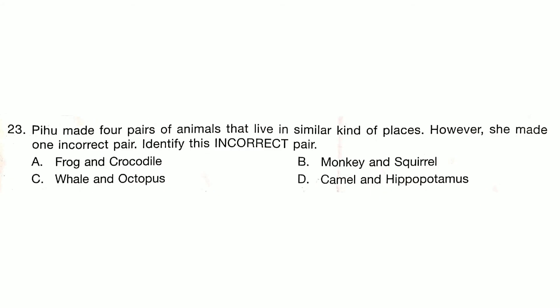P.U. made four pairs of animals that live in similar kinds of places. However, she made one incorrect pair. Identify this pair. Answer is Option D: Camel and Hippopotamus.